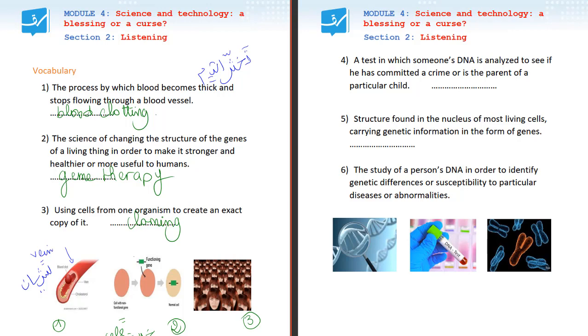Number four. A test in which someone's DNA is analyzed to see if he has committed a crime or if he is the parent of a particular child. What do you call this test? It is a DNA test. Good.